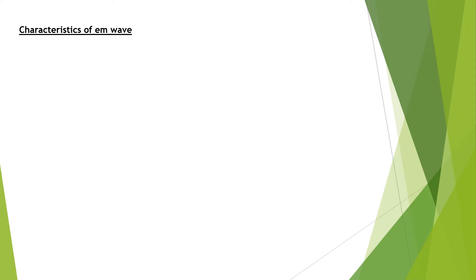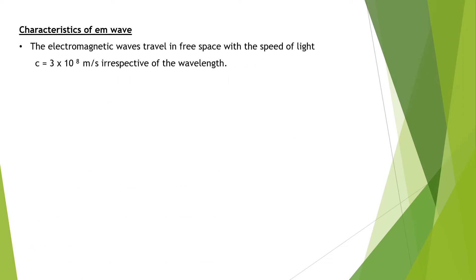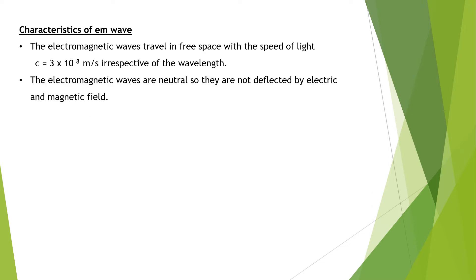Next, what are the characteristics of EM waves? The first one is electromagnetic waves travel in free space with the speed of light, that is 3 × 10⁸ meters per second, irrespective of wavelength. Electromagnetic waves include many waves of different wavelengths, but all move with the same speed. The next characteristic is electromagnetic waves are neutral in nature — they won't be deflected by electric or magnetic fields.